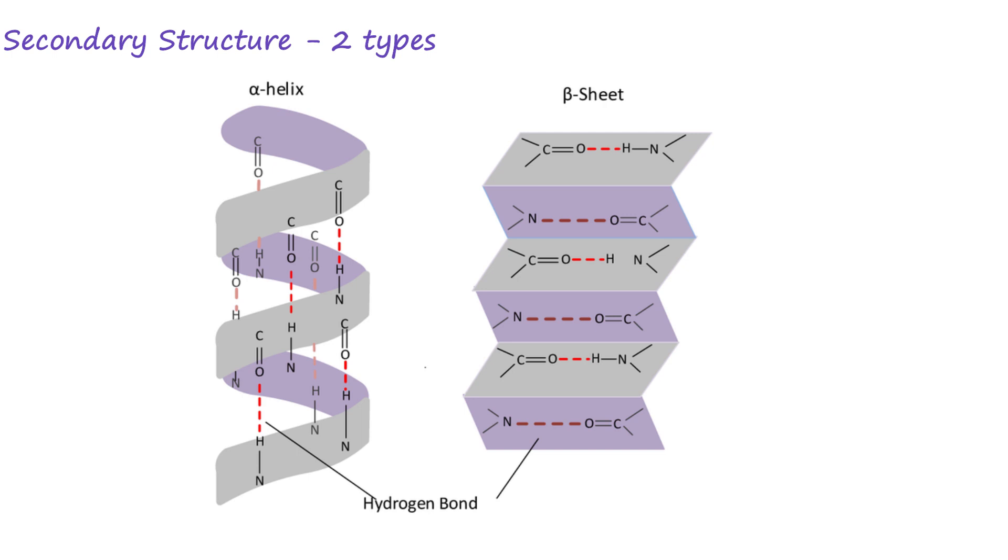Then, this chain is going to coil and hydrogen bonds will form between the peptide bonds. It's important to note that the hydrogen bonds are not forming between the R groups, but instead between the peptide bonds that hold the amino acid chain together.